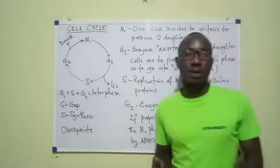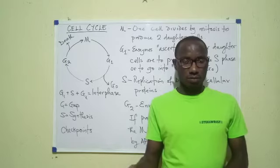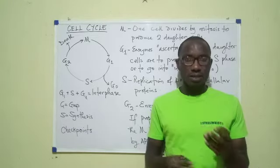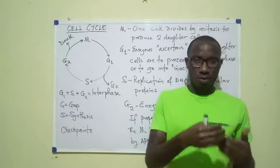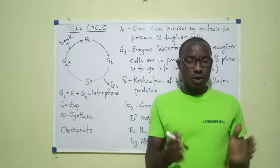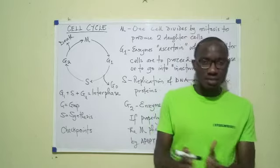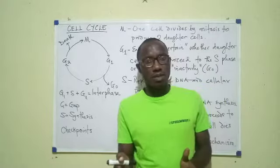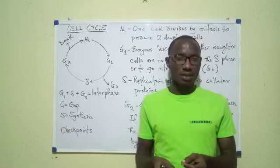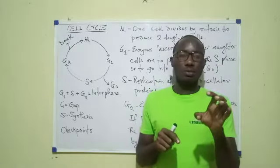The cell cycle talks about the division of cells into daughter cells and the events leading up to that division. So we're talking about two things: first, the division of the cell, and second, the activities and events that occur in the cell before that division. All of those events that lead up to the division are referred to as interphase, and then the division itself involves two sub-processes: mitosis and cytokinesis.